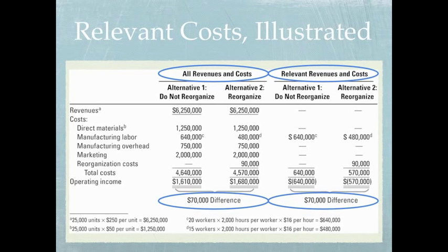Same with direct materials — they don't change, so we leave them out of the decision process. However, manufacturing labor is relevant because those costs are different: $480,000 for alternative two and $640,000 for alternative one. Manufacturing overhead and marketing we leave blank because they do not change based on the alternative. However, reorganization costs — we would have $90,000 in reorganization costs that we would not have if we didn't reorganize. Adding up our costs, the total relevant cost for reorganizing is $570,000 and for not reorganizing is $640,000, for a total difference between alternatives of $70,000.